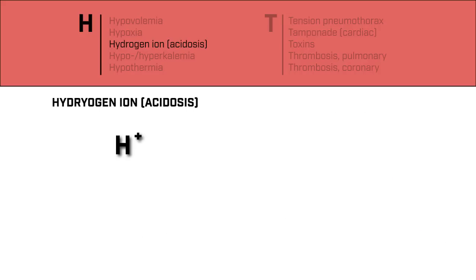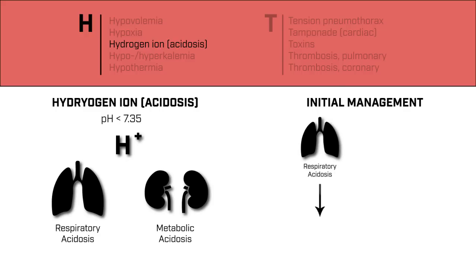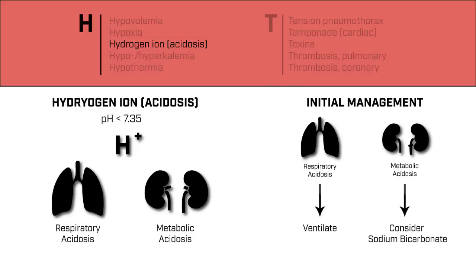Remember that acidosis can be either metabolic or respiratory. Obtaining a blood gas is a quick way to determine if a patient is acidotic. In general, a pH less than 7.35 is considered acidotic. If a patient's process is a respiratory acidosis, ensure that they have adequate ventilation. If the process is a metabolic acidosis, you may administer sodium bicarbonate.